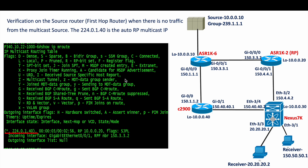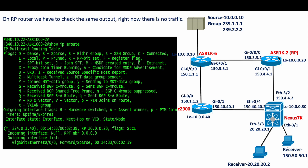Now we log in to the first hop router and verify whether the source is sending traffic. When there is no traffic, we won't see anything — we just see 224.0.0.1.40 by default, which is for the Auto-RP multicast IP. We go into the RP router and give the command 'show ip mroute'. We don't see any entries because there is no traffic coming from either the source or the receivers.